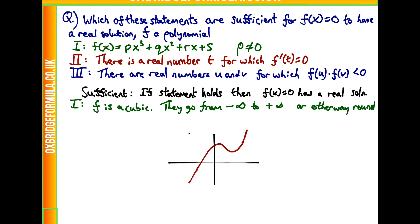So it's going to have a graph which looks like this, where it starts off at minus infinity and then it increases up to infinity. Or it's going to do something like this, going the other way around. In either of these cases, you must cross the x-axis somewhere as it's continuous. So if you go from minus infinity and you must end up at plus infinity, you must cross the x-axis somewhere. So it is sufficient.